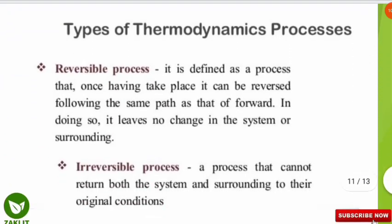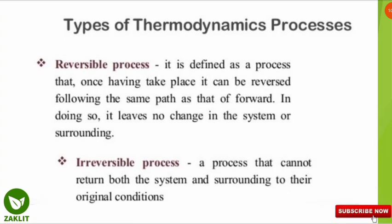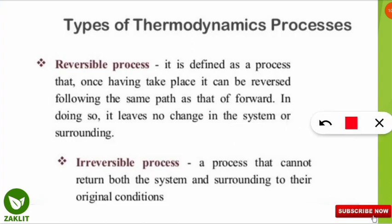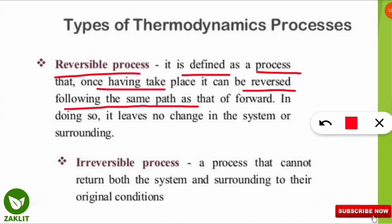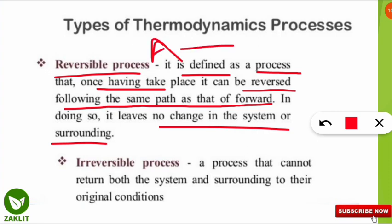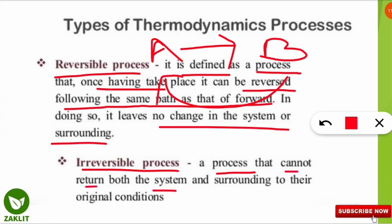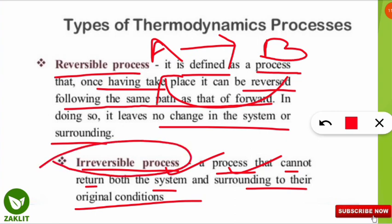A reversible process is one that, once having taken place, can be reversed following the same path as the forward process, leaving no change in the system or surroundings. For example, if compound A changes to B, it can also change back to A under the same conditions. An irreversible process is one where the system and surroundings cannot return to their original condition once the process has occurred.